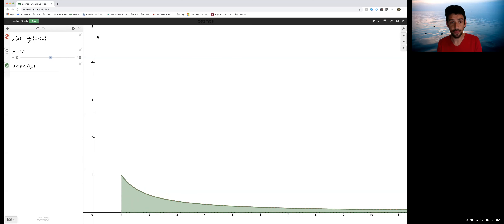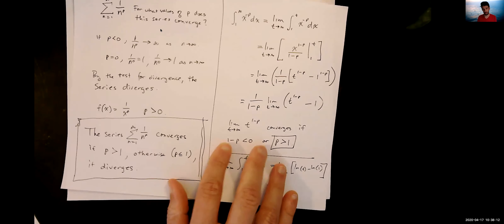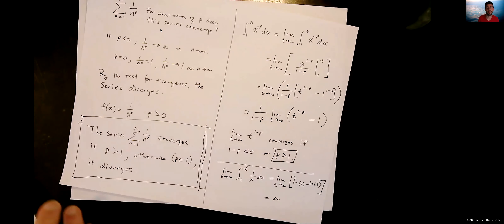That is the P-series rule. You can now cite this rule as sufficient justification for saying that a series converges or diverges. See you next time.